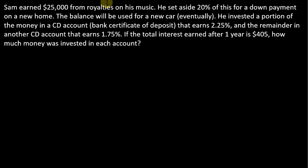Just one more. Sam earned $25,000 from royalties on his music, and he set aside 20% of this for a down payment on a new home. The balance will be used for a new car eventually. He invested a portion of the money in a CD account that earns 2.25% and the remainder in another CD account that earns 1.75%. If the total interest earned after one year is $405, how much money was invested in each account?